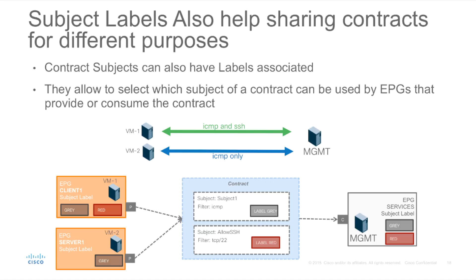For instance, in this case we may have VM1 and VM2, part of different EPGs, use the same contract to reach a particular management station on the management EPG. However, even if they are using the same contract, VM1 may be able to use ICMP and SSH, whereas VM2 will be restricted to ICMP only. This is accomplished because the subject for ICMP has one label and the subject for SSH has a different label.